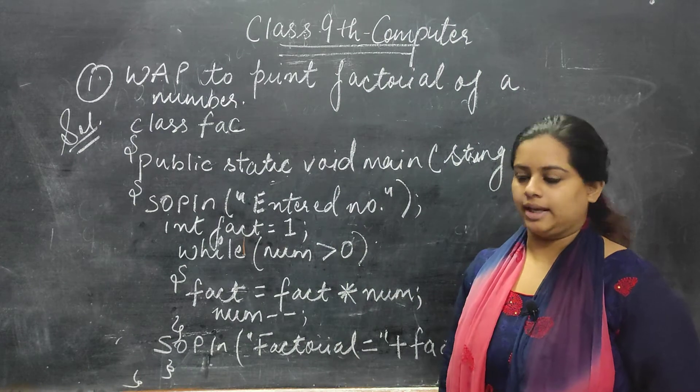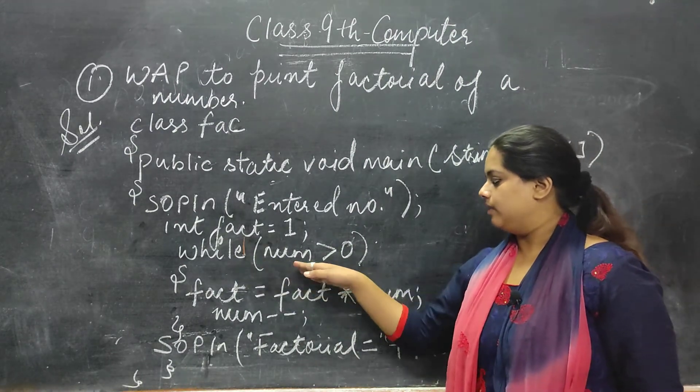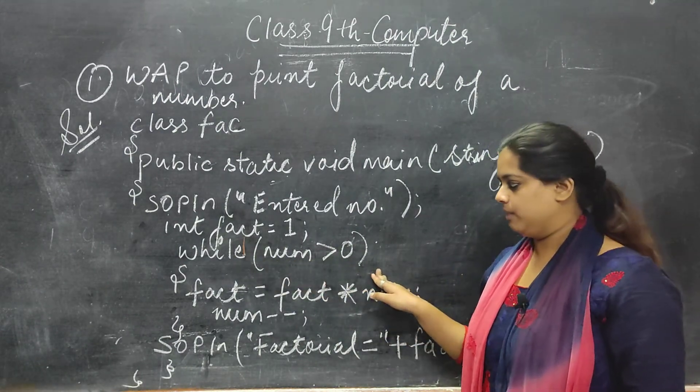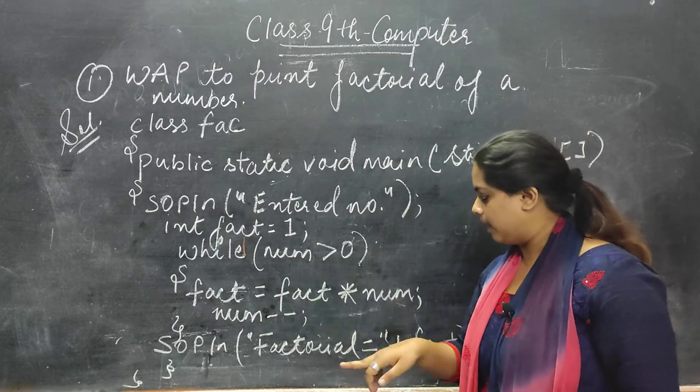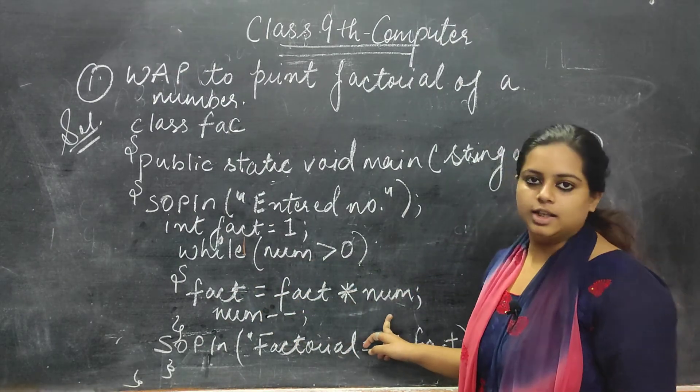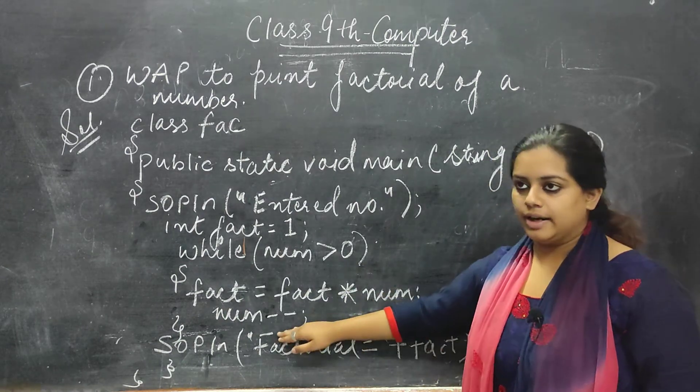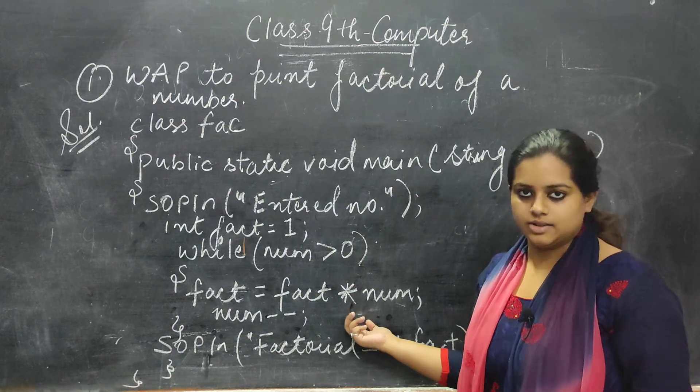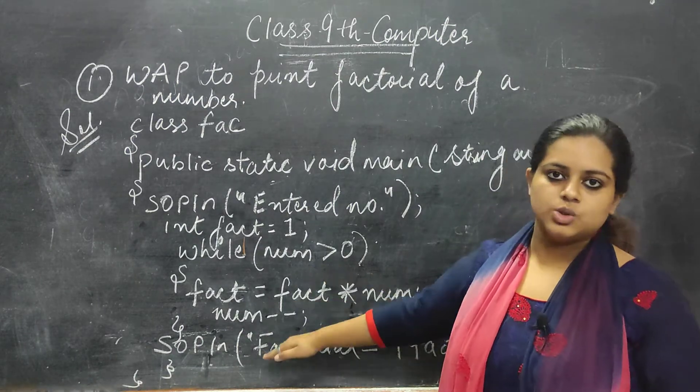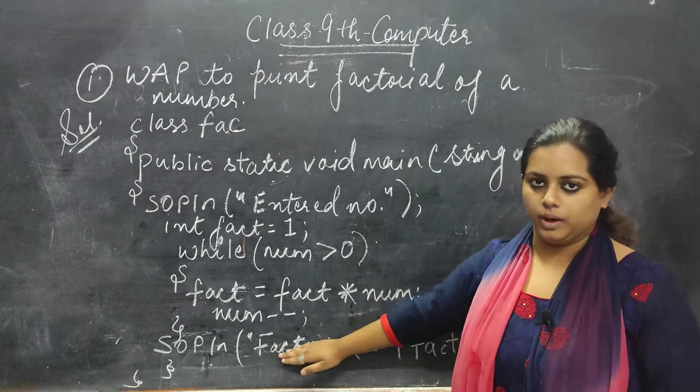Then the condition which I am applying is while number is greater than 0, then factorial is equal to the FACT, that is 1, multiplied by the number. And finally, when you will get a number, you will get a result, then that needs to be deducted by value 1.